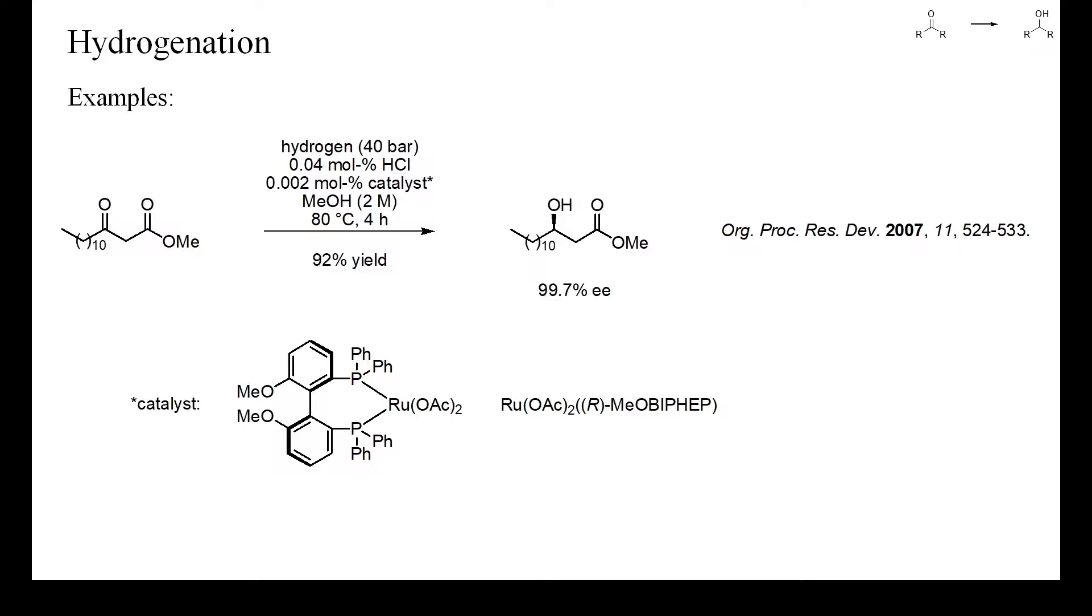1,3-dicarbonyl compounds are CH-acidic and form rather unreactive salts when treated with bases. These enolates are good ligands and many undergo ligand exchange with other metal complexes. Therefore, the catalytic hydrogenation of beta-ketoesters is best conducted in the presence of acids to prevent salt formation and ligand exchange. In this instance, a ketoester was hydrogenated enantioselectively, again with only traces of a ruthenium catalyst.